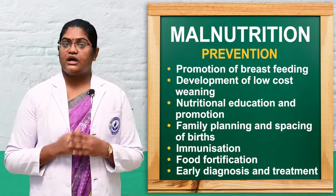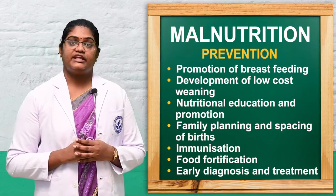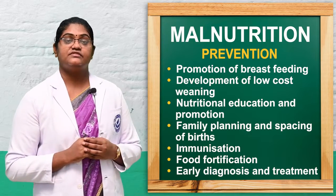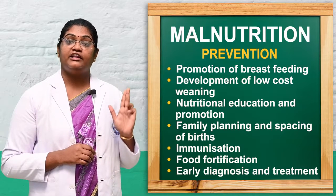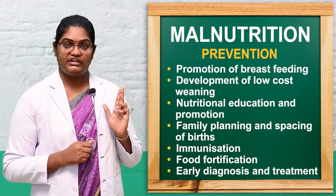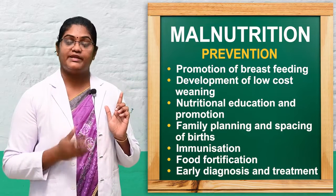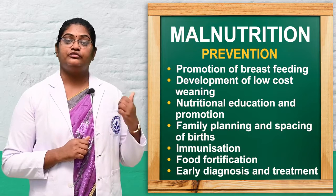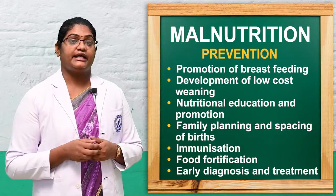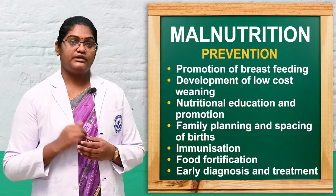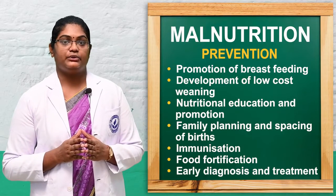Prevention methods include promotion of breastfeeding, developing low-cost weaning foods, family planning and birth spacing, immunization, food fortification, and early diagnosis and treatment to help control complications. These are all the prevention methods for malnutrition.